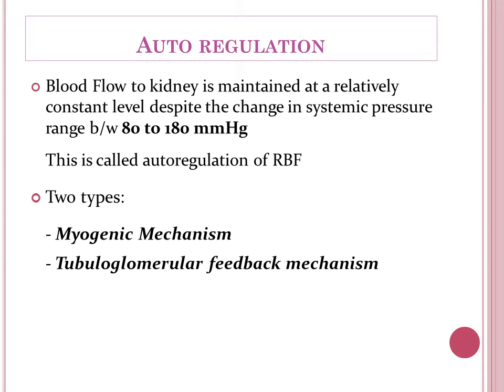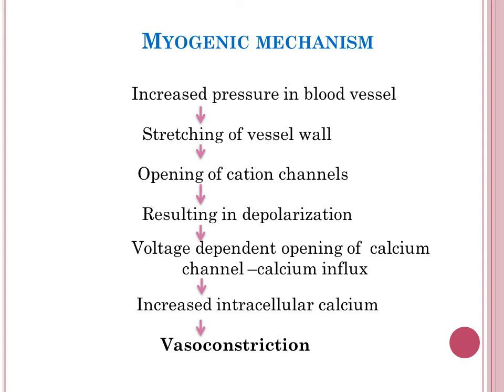Autoregulation: the kidney maintains blood flow at a relatively constant level despite changes in systemic pressure between 80 to 180 mmHg. Beyond this range, the kidney cannot maintain blood flow on its own. There are two mechanisms: one is the myogenic mechanism, which depends on the strength of the vascular smooth muscle. When blood pressure increases, stretching of the vessel wall causes opening of calcium channels, resulting in rapid depolarization, influx of calcium, and ultimately vasoconstriction, which normalizes the increased blood flow.